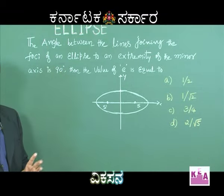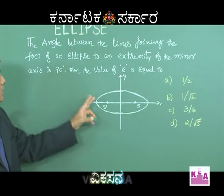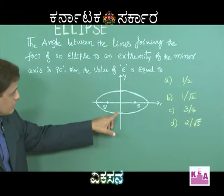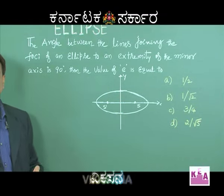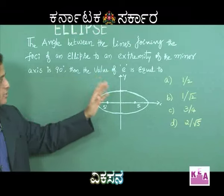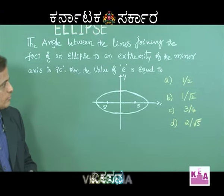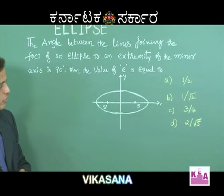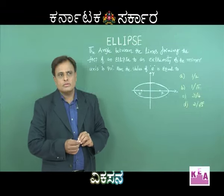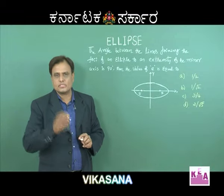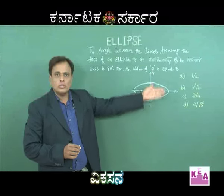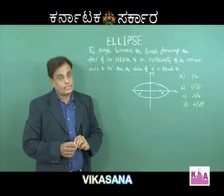Simple example: find the angle between the lines joining the foci of an ellipse to an extremity of the minor axis. If the angle is 90 degrees, find the value of eccentricity e. Options are: (a) 1/2, (b) 1/√2, (c) 3/4, (d) 2/√5. For an ellipse, eccentricity is always less than 1 — and almost all options satisfy that — so we need to work through the problem.